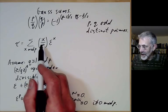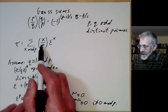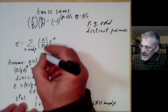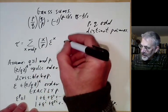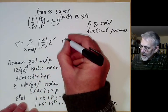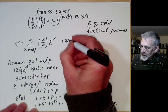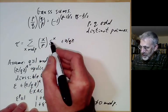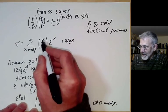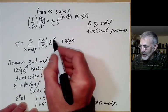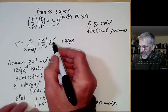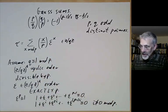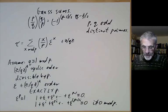So that's what the Gauss sum is — it's an element of Z/qZ, because the Legendre symbol is ±1 and epsilon^x is an element of Z/qZ.